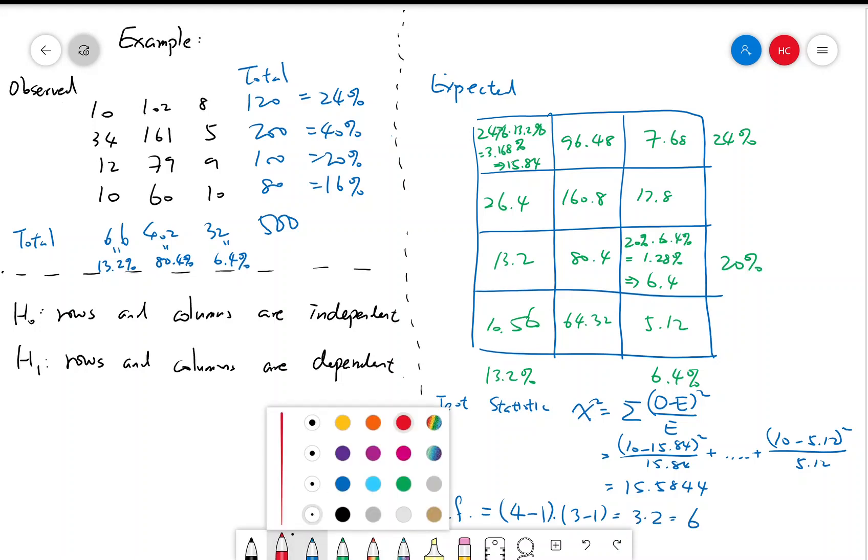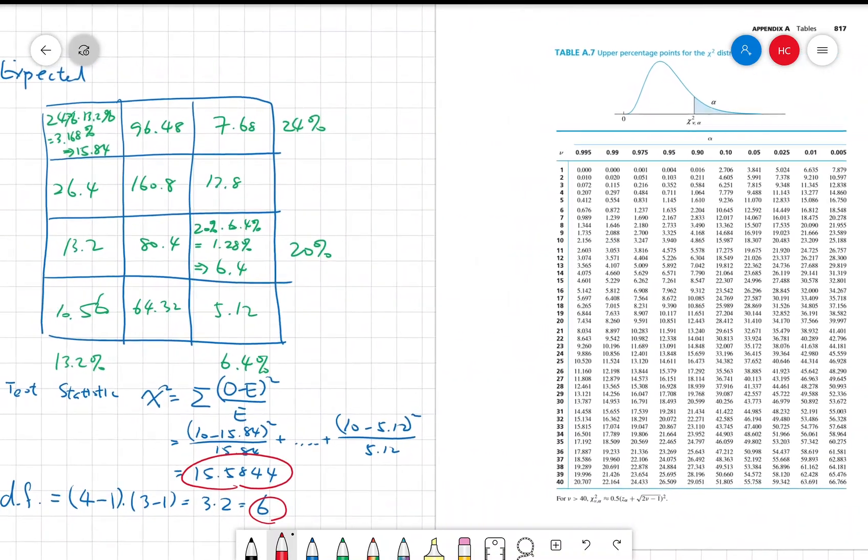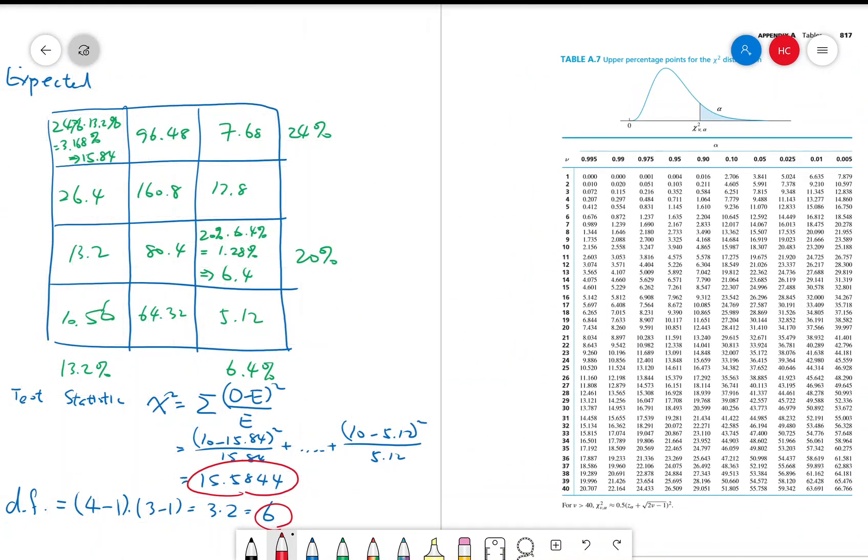So degree of freedom is 6, and this is our value of chi-squared. So if you look at the table here, degree of freedom is 6, chi-squared is equal to 15.5844. That's between these two values. So that means our p-value is between these two values.